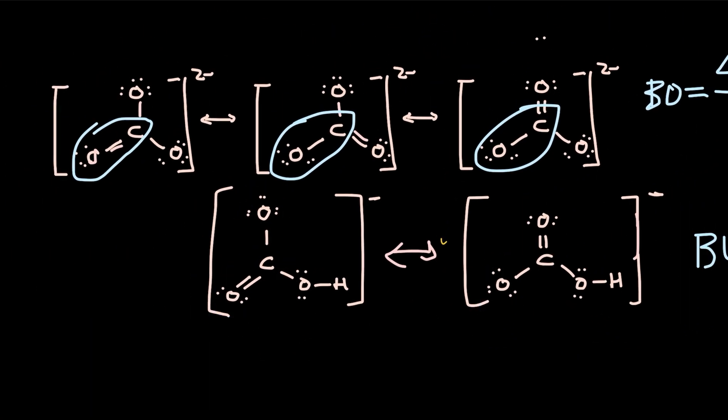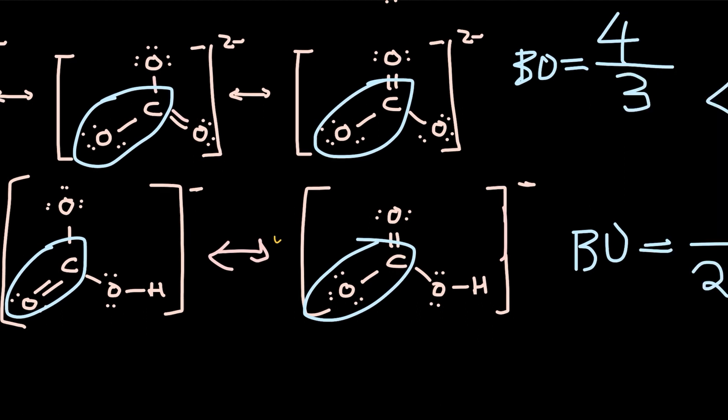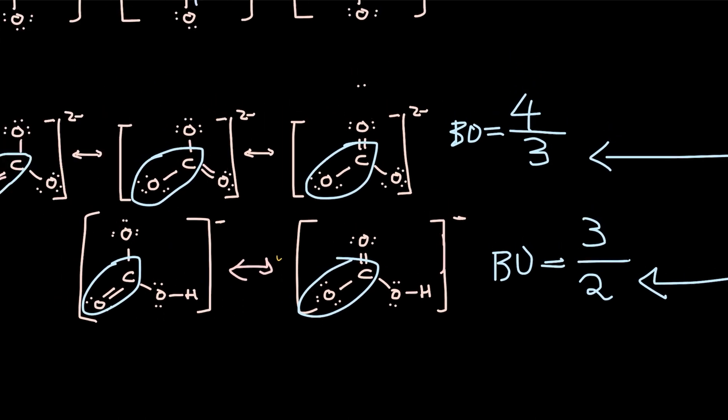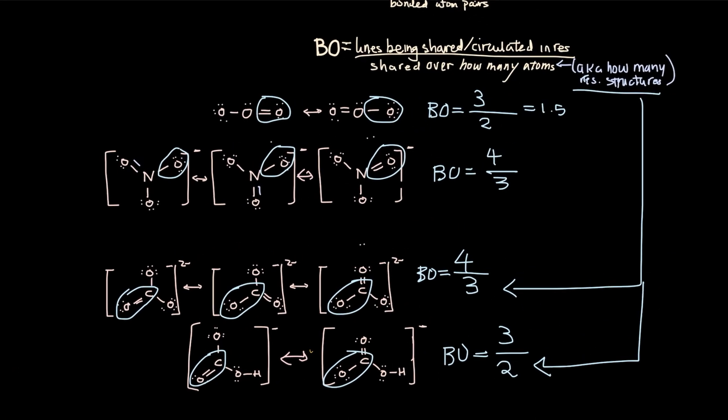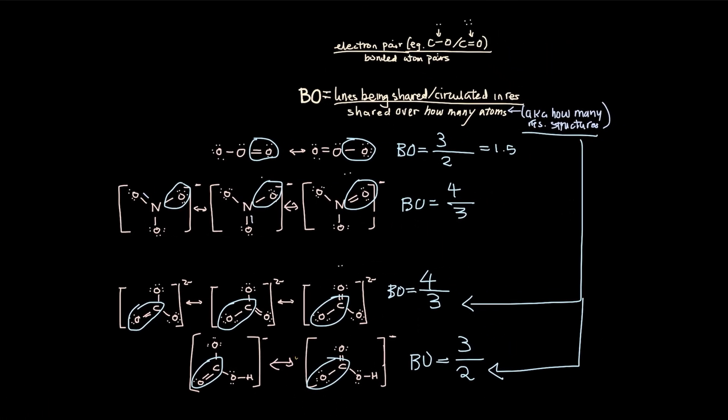Okay, so then we will look at this oxygen. The first diagram oxygen is being shared with two electron pairs, and adding with a second diagram, its total is three electron pairs being circulated throughout this resonance structure. That's how you find a bond order for resonance structures.